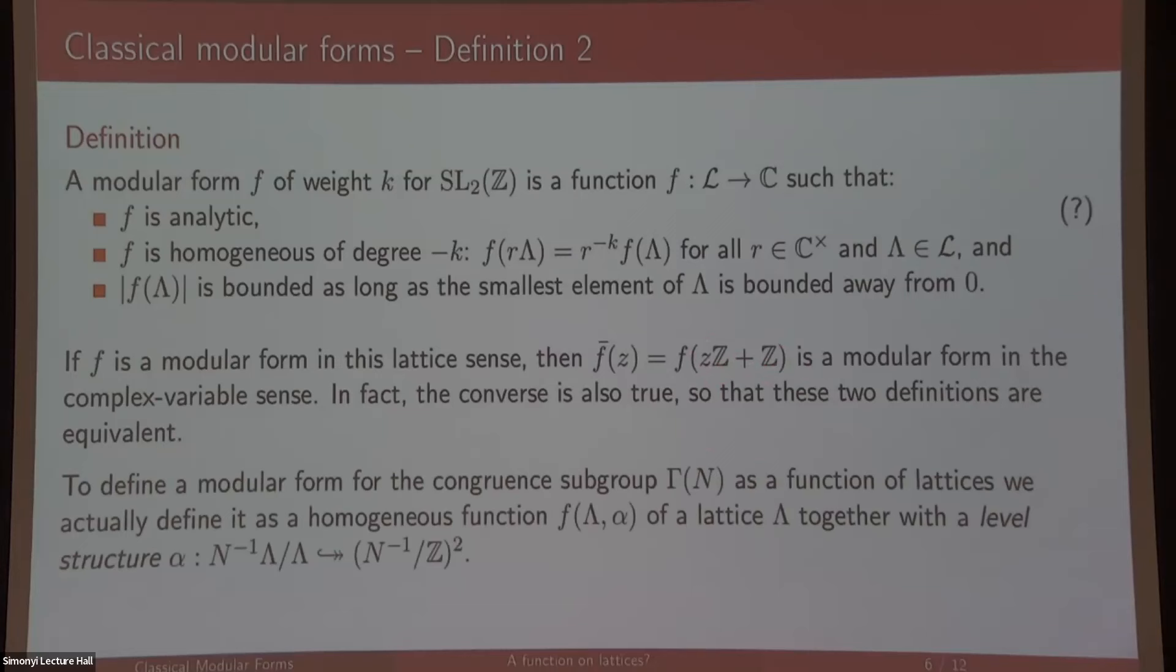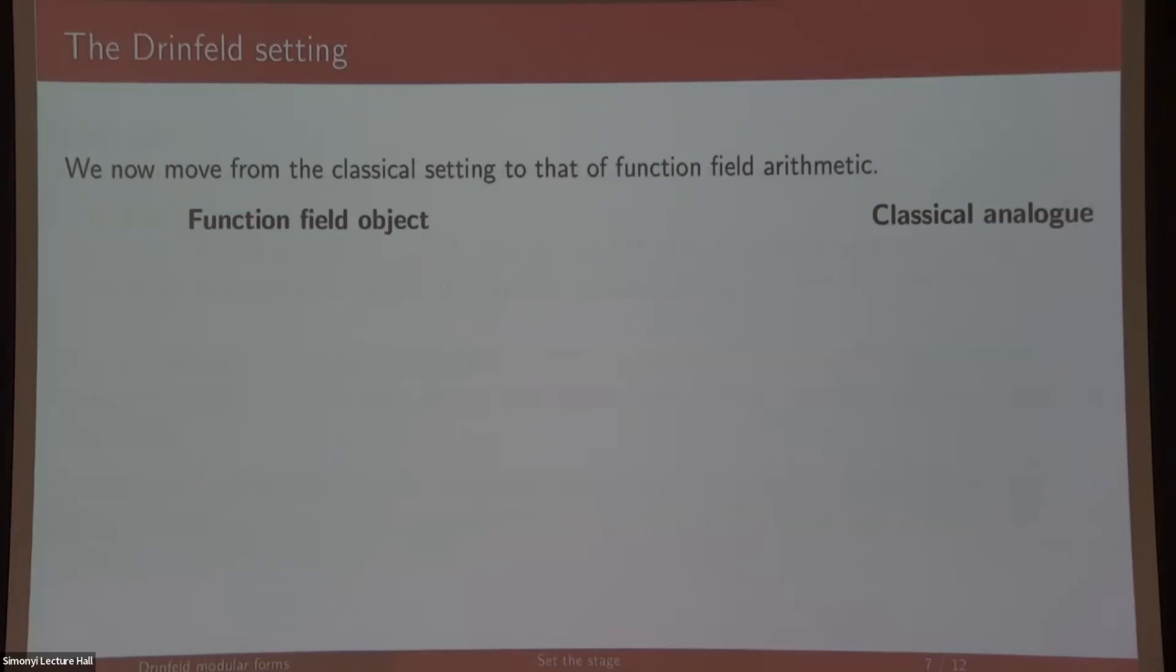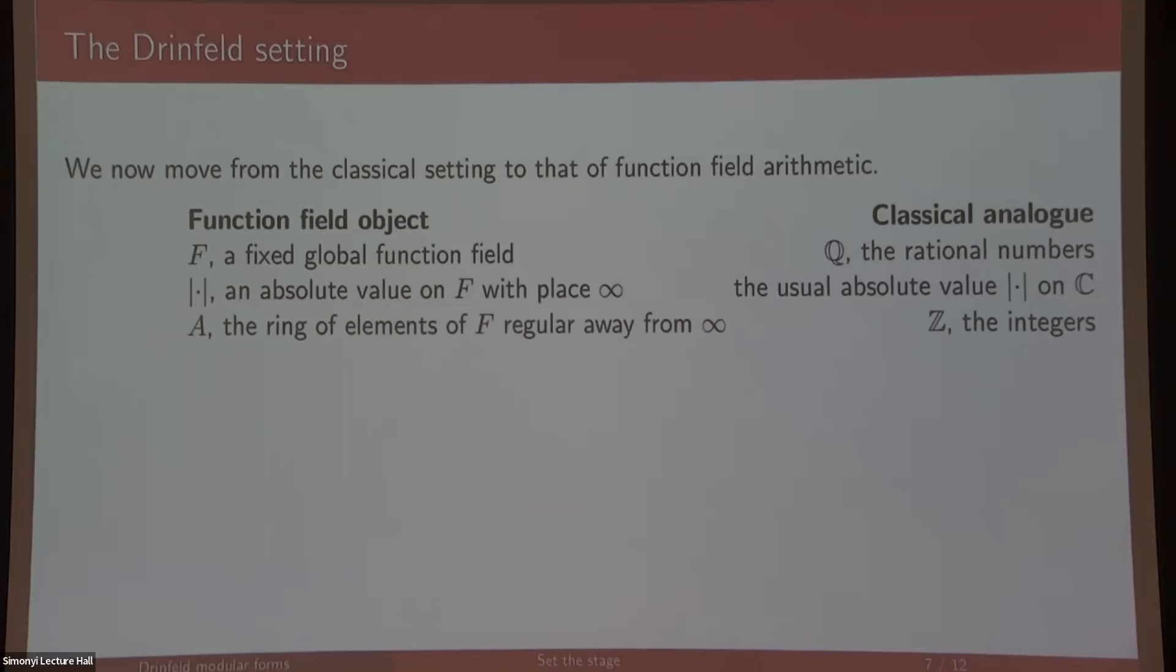That's a brief introduction to classical modular forms. Now we're moving into the world of function fields where Drinfeld modular forms are defined. A lot of it is very analogous. We define a field, a global function field F, where the classical analog would be the rational numbers. We define an absolute value on F. We pick for that absolute value all the elements which are regular away from infinity—that analog is the integers.